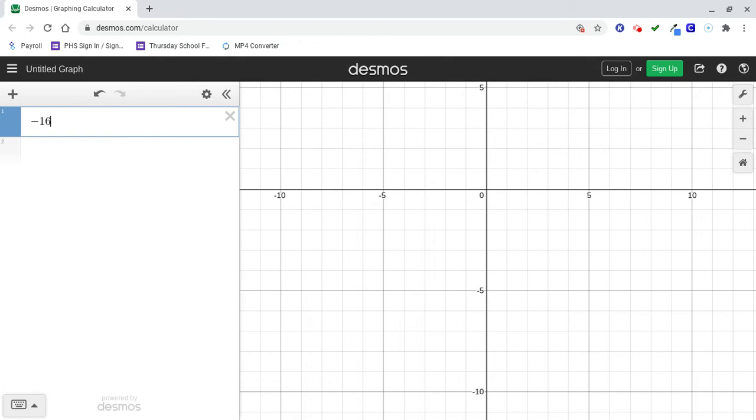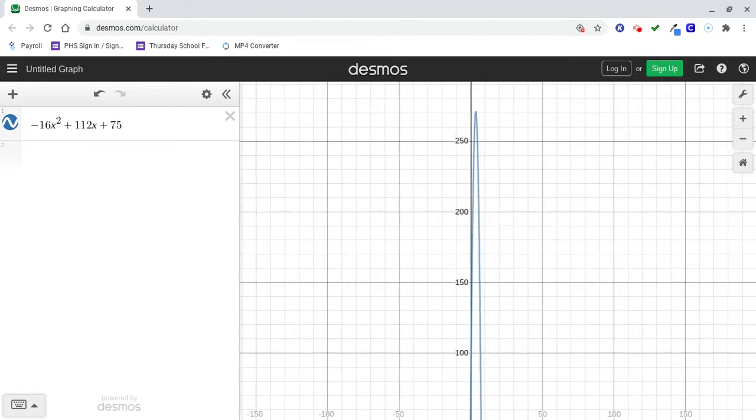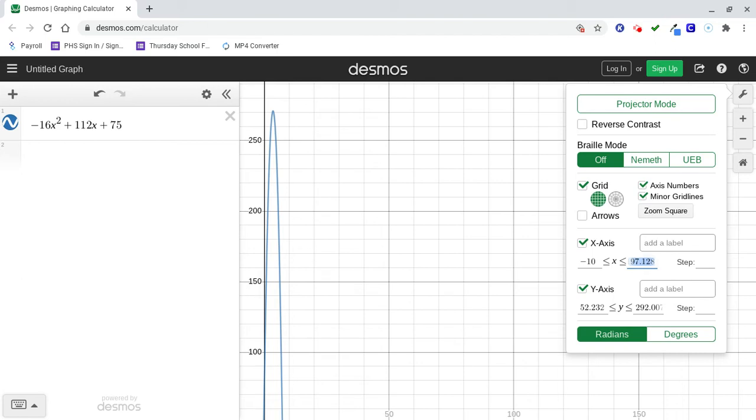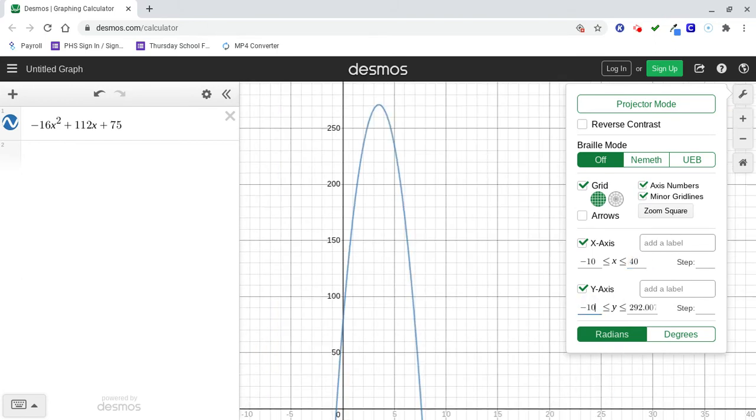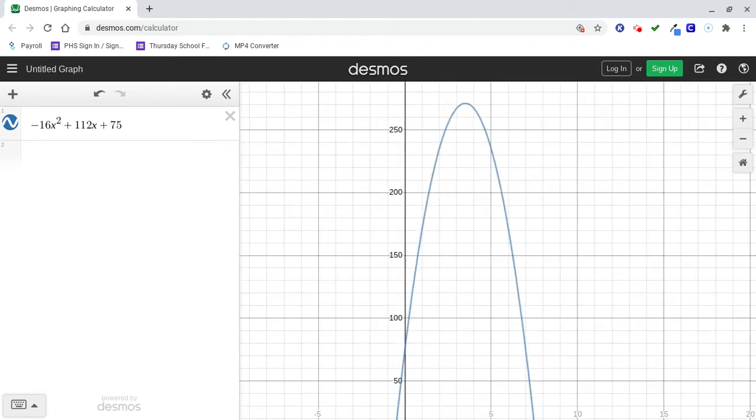We have negative 16t squared plus 112t plus 75. That didn't graph it. I guess because Desmos doesn't recognize t as a variable. Let's change it to an x instead of a t. That might be better. So we've got this really steep looking parabola. Let's just change the x-axis. We're going to go from negative 10 to 40. And your y-axis, we're going to go from negative 10 to 60. Let's crank this x40 down to x20. That is a little bit better, I guess.